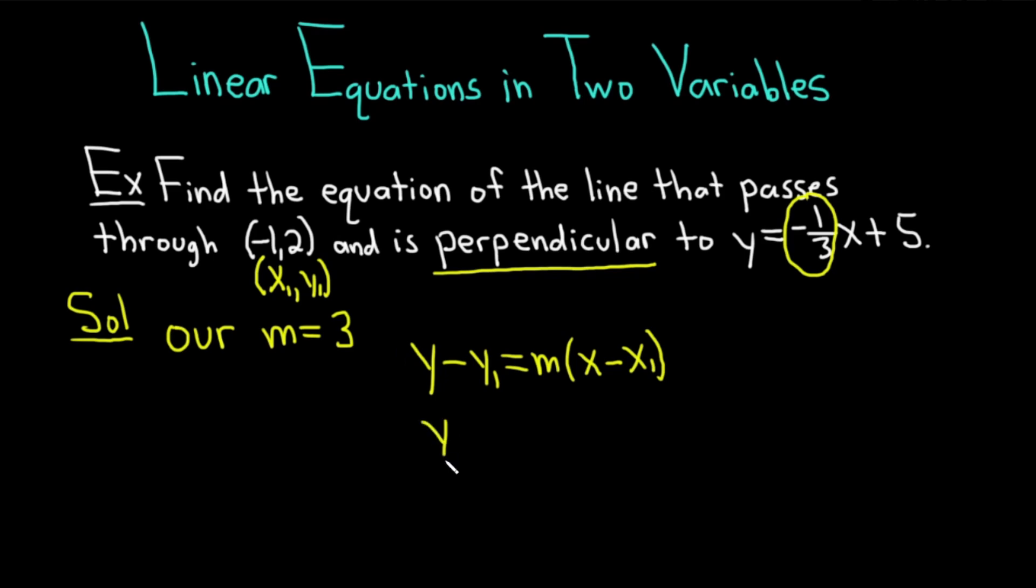So this is y minus, y₁ is 2, and our m is 3. Then we have x. So it's x minus negative 1. It's already negative and there's a minus here, so it's going to become a plus because of the double negative.